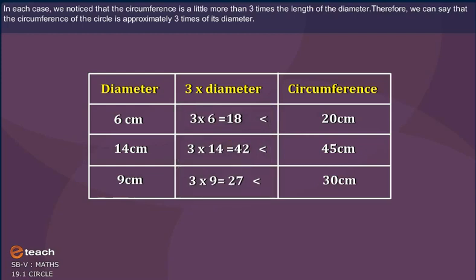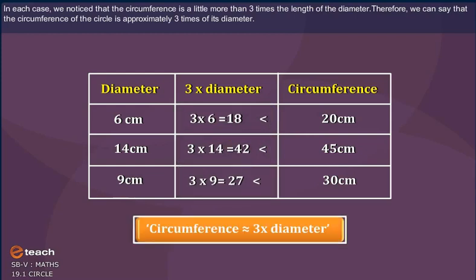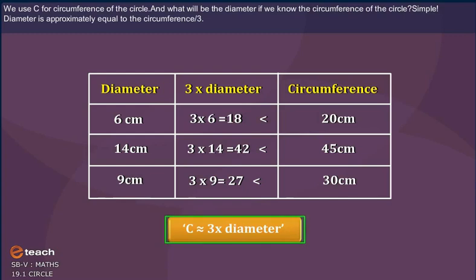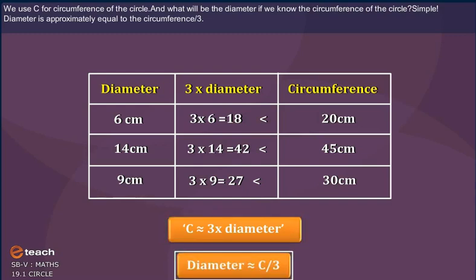Therefore, we can say that the circumference of the circle is approximately three times of its diameter. We use C for circumference of the circle. And what will be the diameter if we know the circumference of the circle? Very simple. Diameter is approximately equal to the circumference by three.